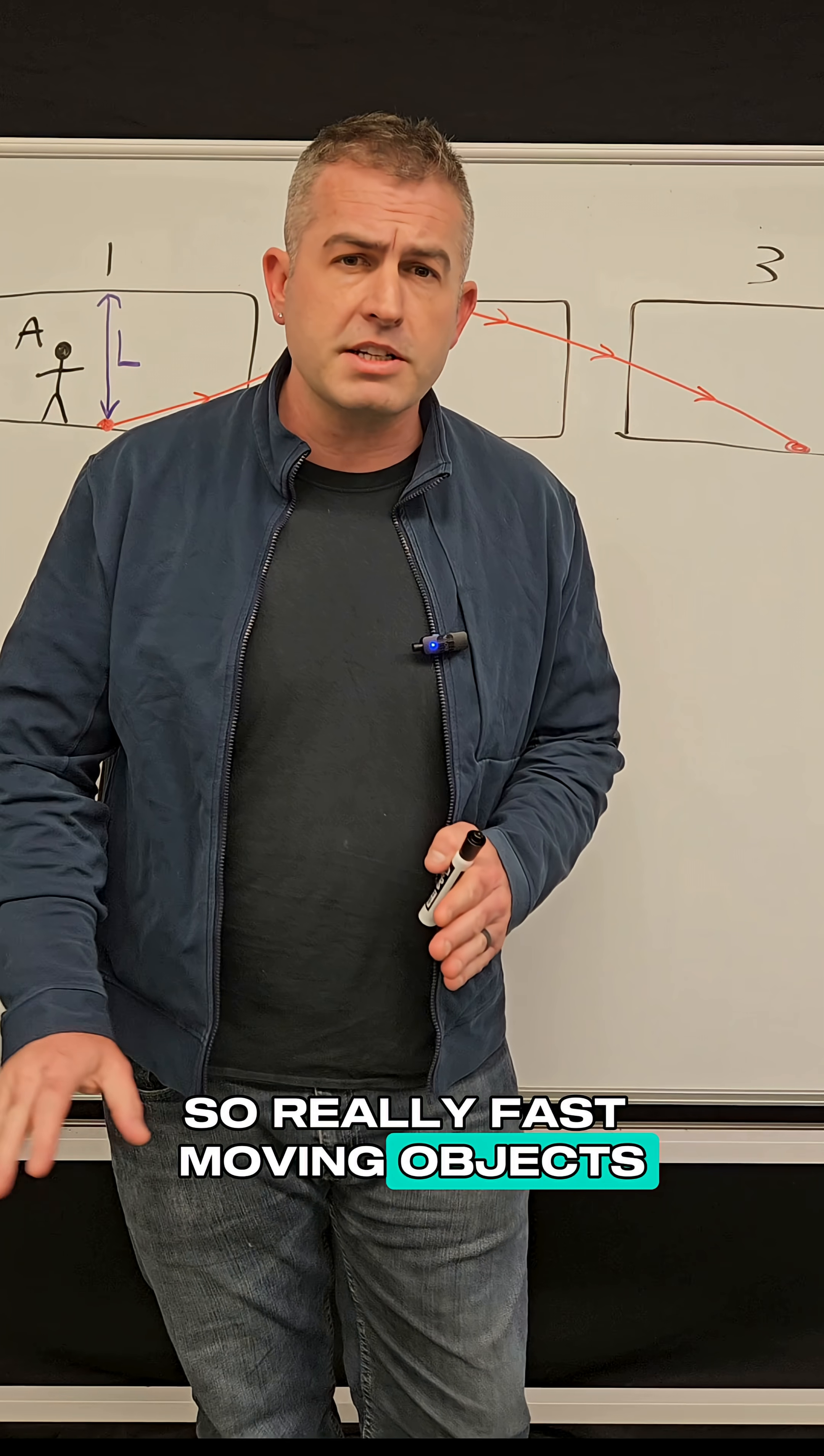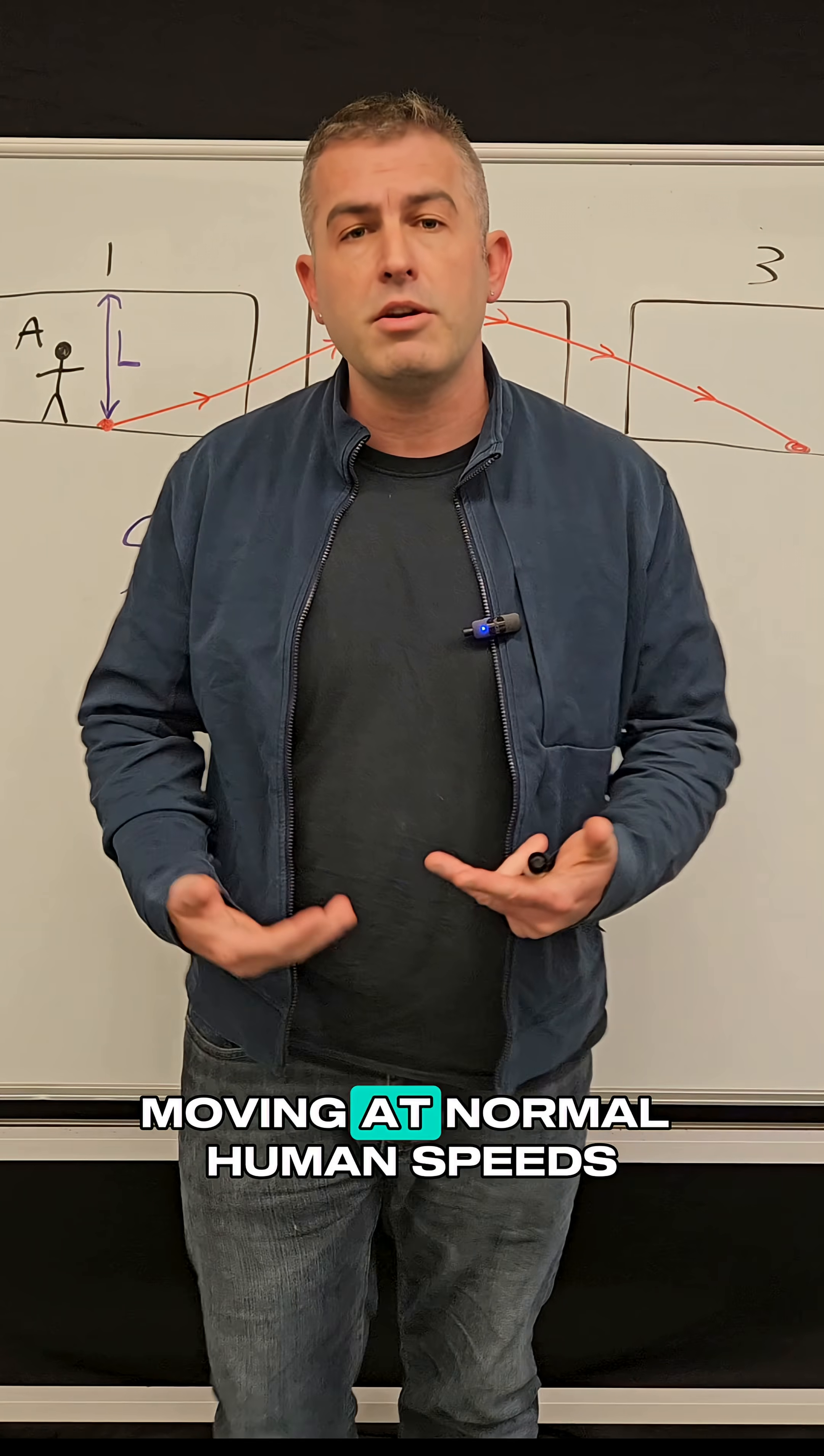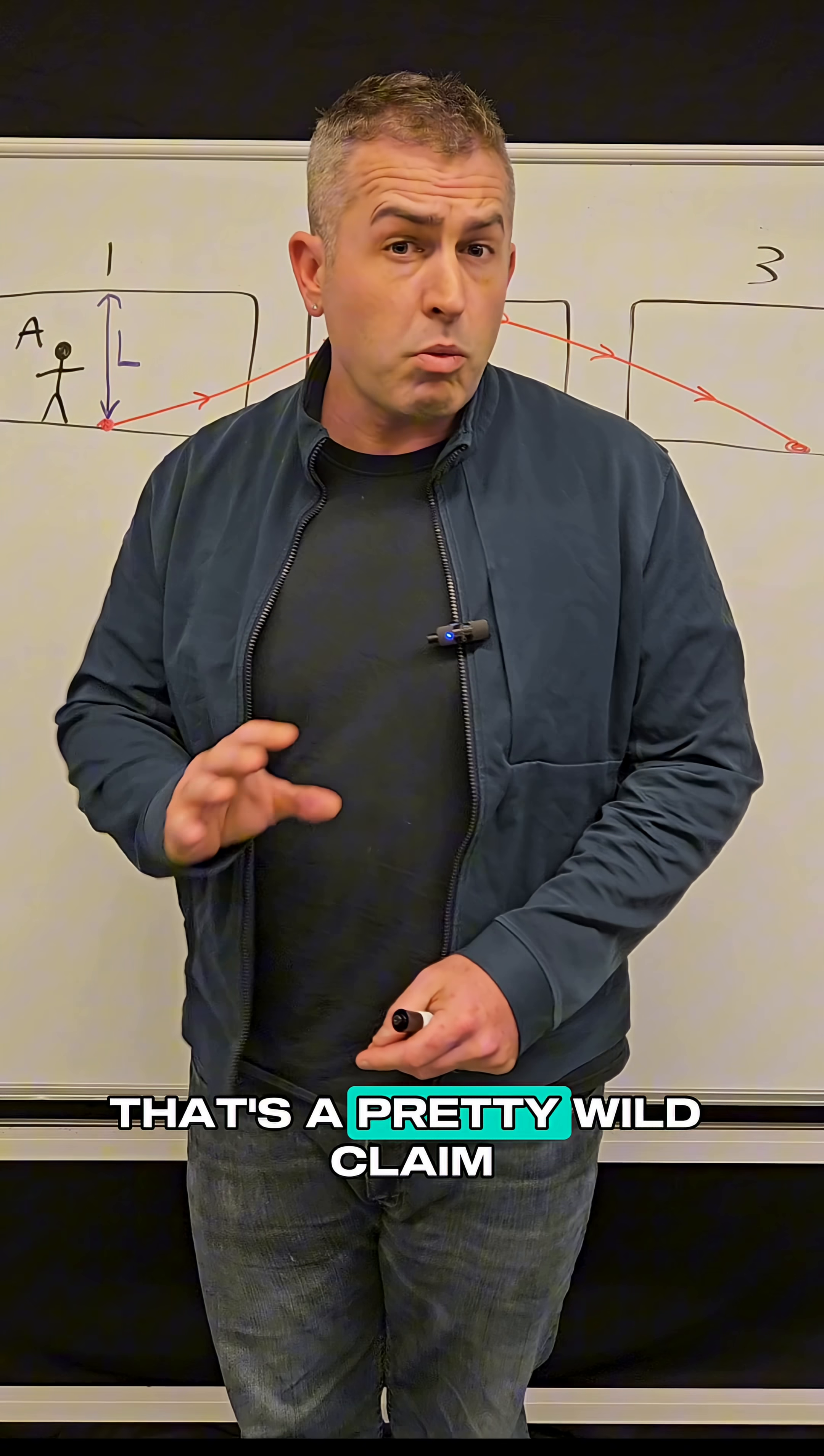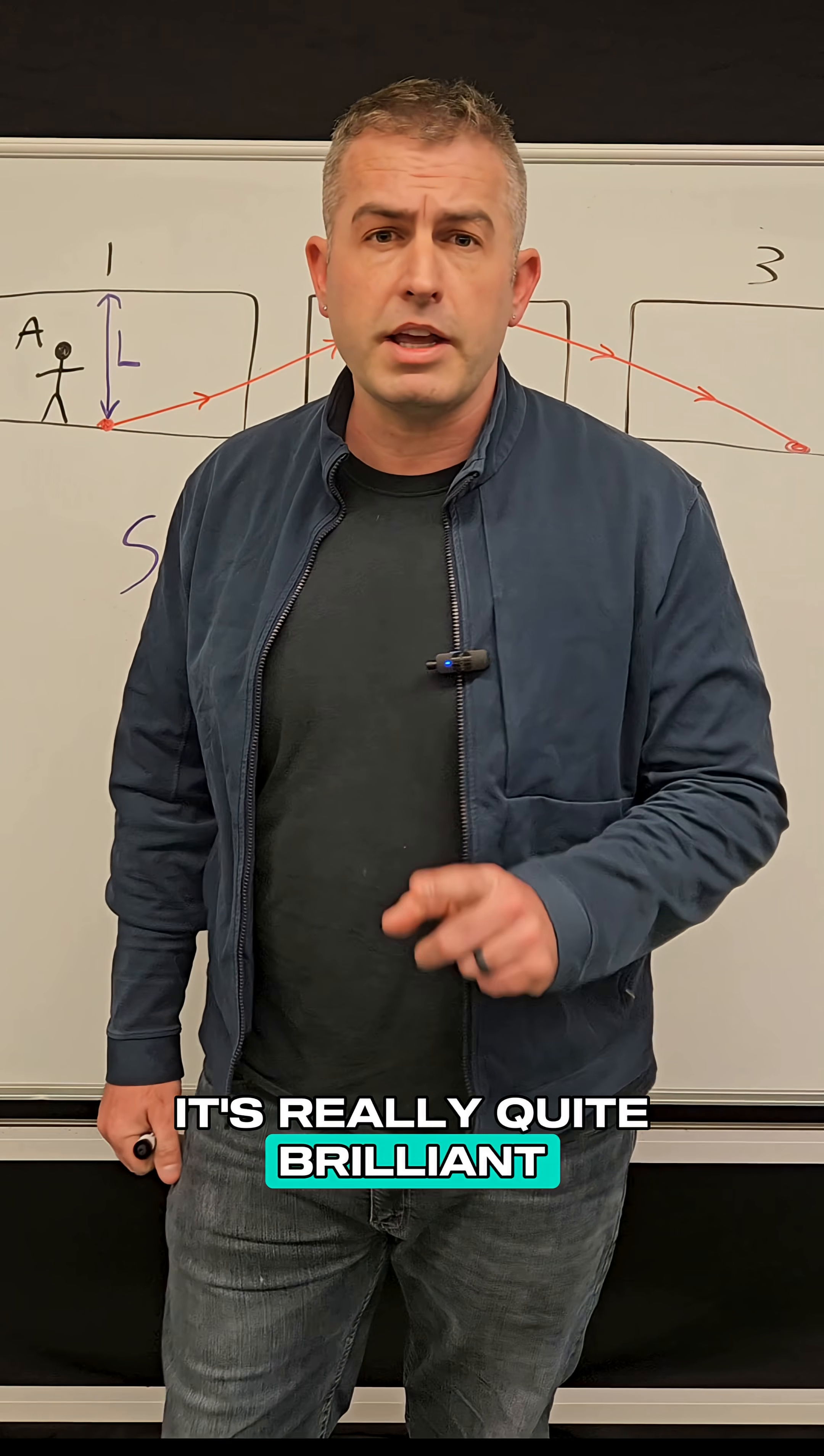So really fast moving objects, time actually slows down for them relative to objects moving at normal human speeds. That's a pretty wild claim. So how did Einstein explain this to people and what's the proof? It's really quite brilliant.